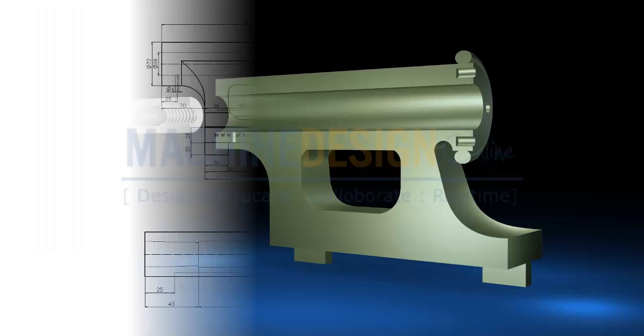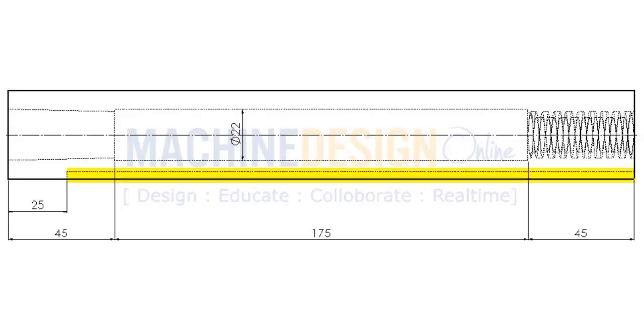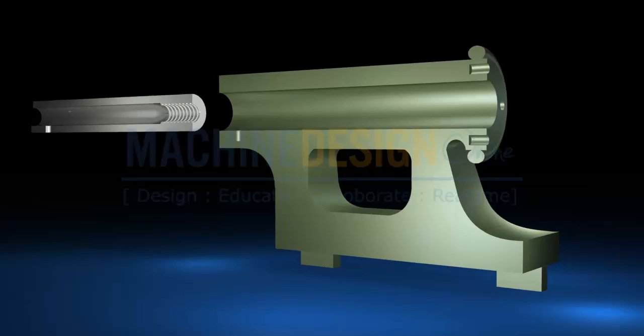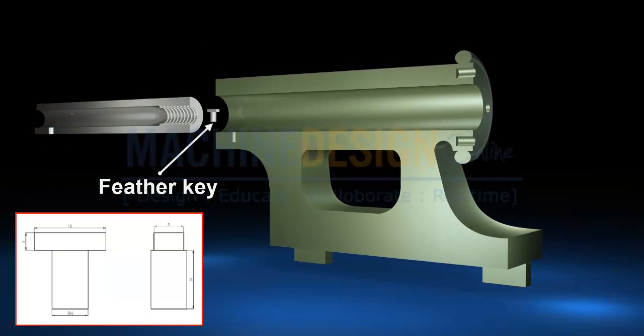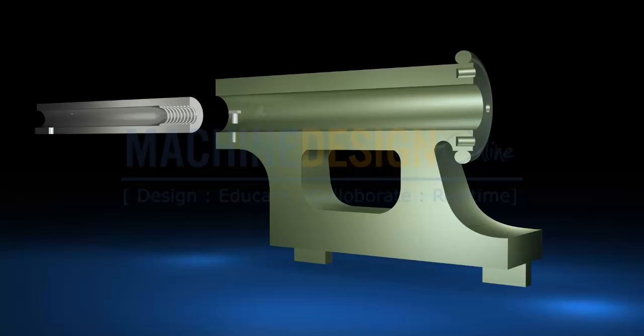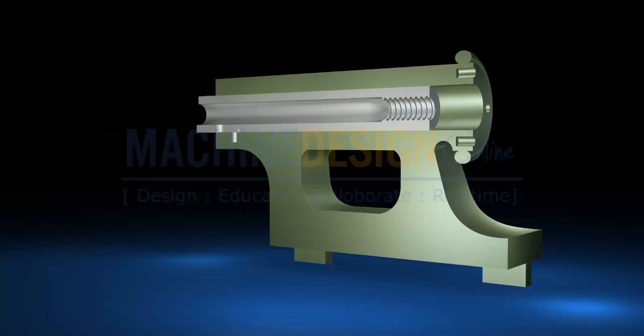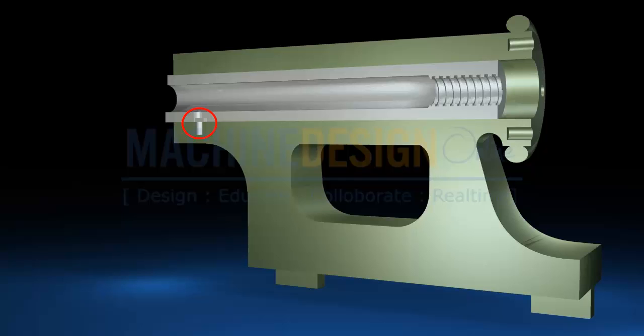If you see closely the barrel, it shows a feather key way 5x3 and a groove of diameter 6 in body. We can find feather key which has exact dimension of feather key way. Let's place feather key in body before barrel and now we can see that barrel position is fixed.